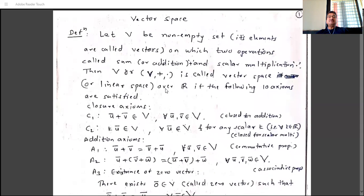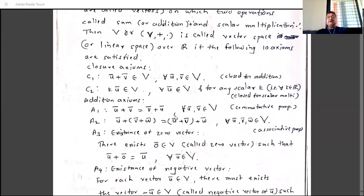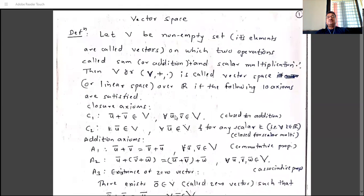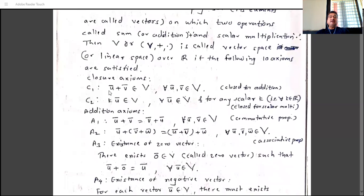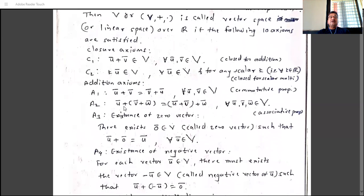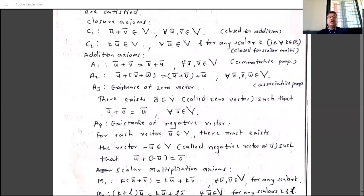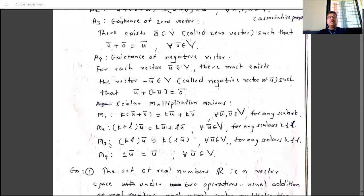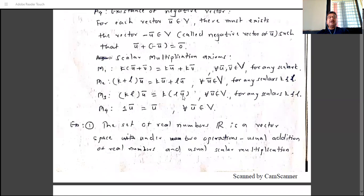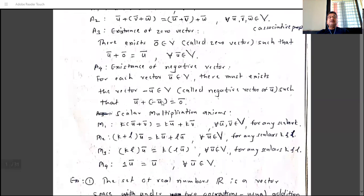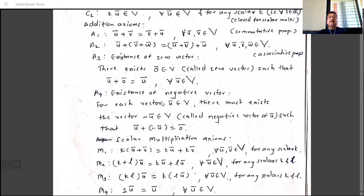A vector space means one non-empty set, two operations, and 10 axioms. Aggregately, this structure is called a vector space. The 10 axioms are grouped as: the first two are closure axioms, the next four are addition axioms, and the last four are scalar multiplication axioms.